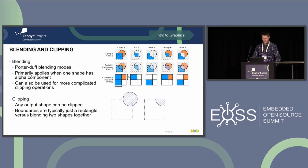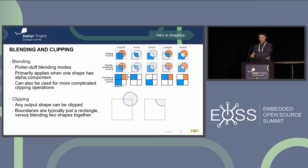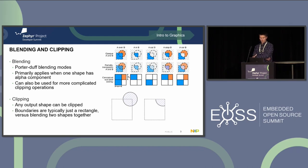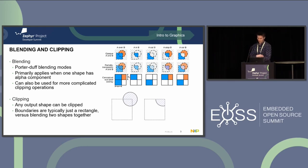Blending and clipping are two additional things to be aware of. Blending is the idea of taking two rasters and mixing them together — it's typically more useful when they have an alpha component. You can see examples here of different ways to blend two shapes, putting one over the other with how the alpha components mix. Clipping is a subset of blending — when drawing a path you can clip within a rectangle, like taking a circle path and clipping it down to get a different shape.